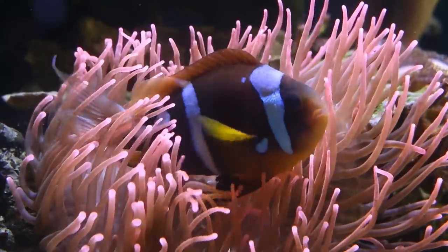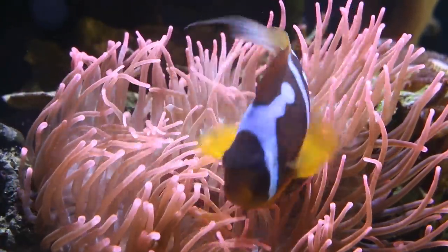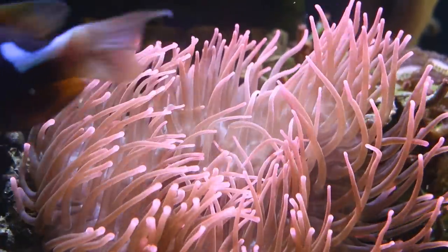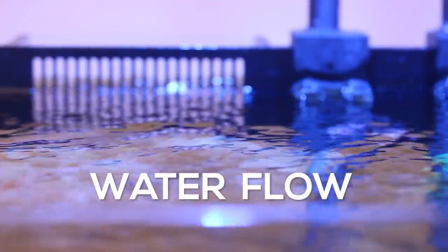The importance of PAR and a stable light cycle is a key factor for having vibrant colors that grow and remain healthy in captivity for many years. On to our second pillar, water flow.